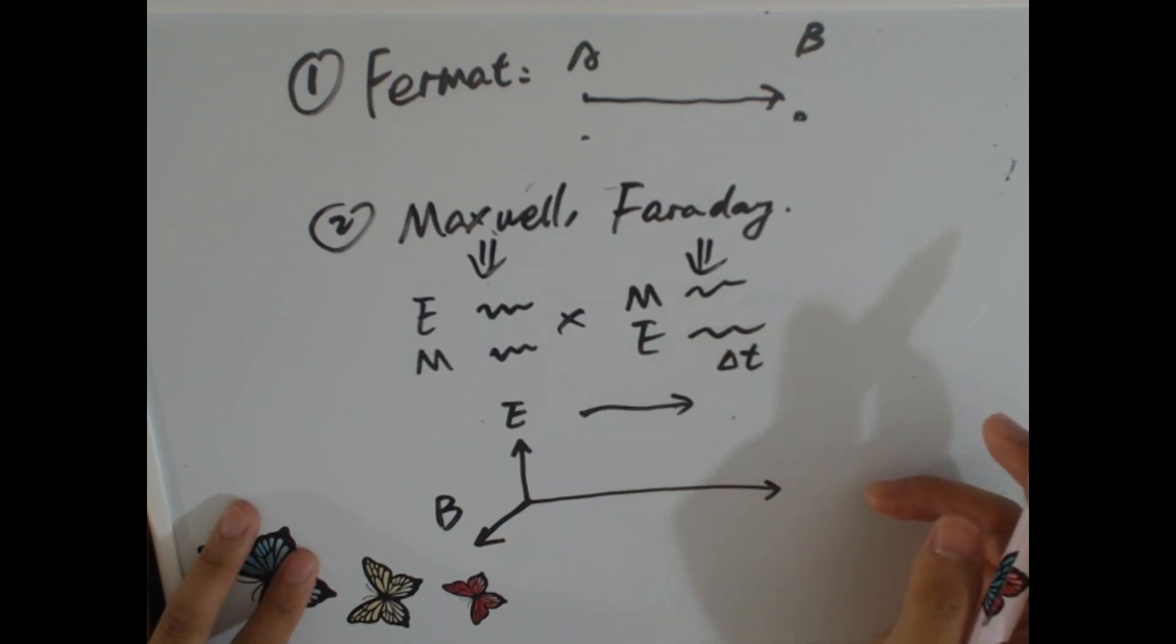And next thing we know is they should be zero at the same time and they should be reaching the maximum value at the same time as well. But they are always perpendicular to each other. And we will mention more about it in polarization later, right?